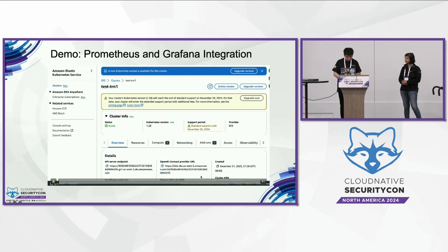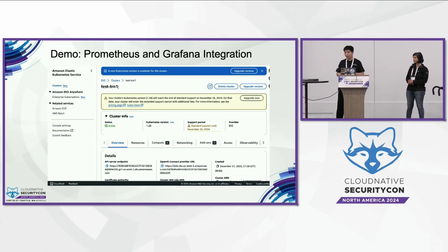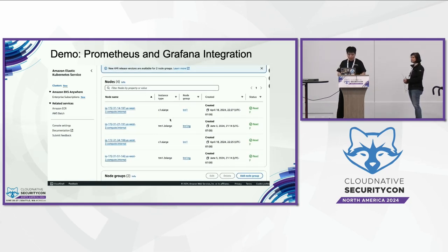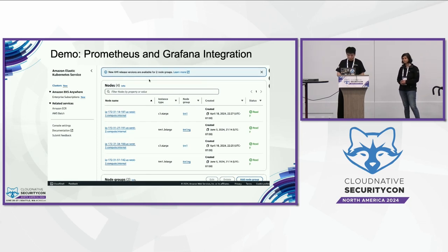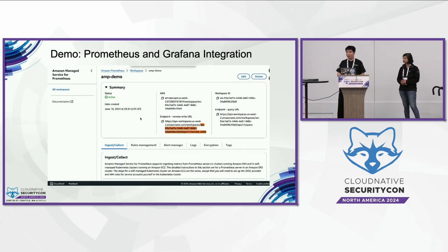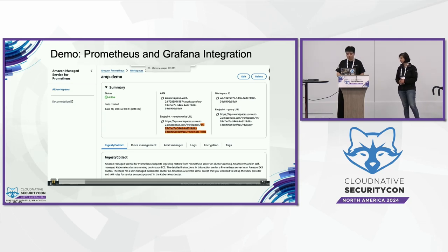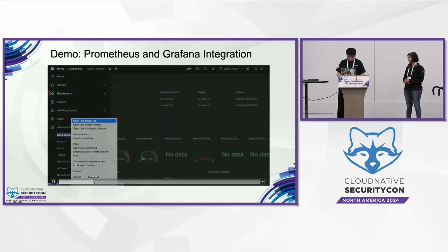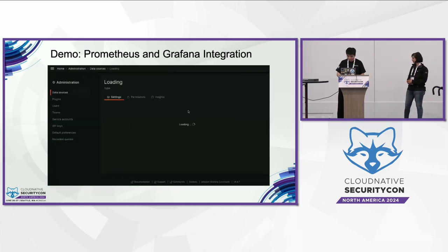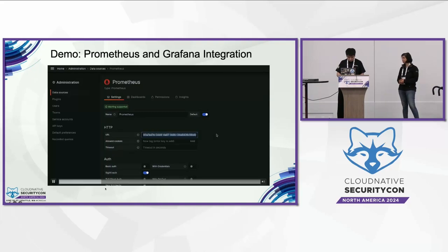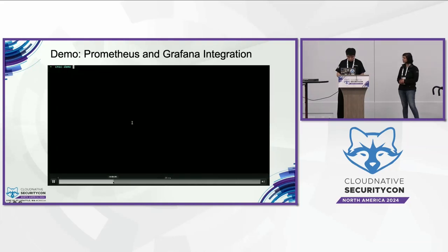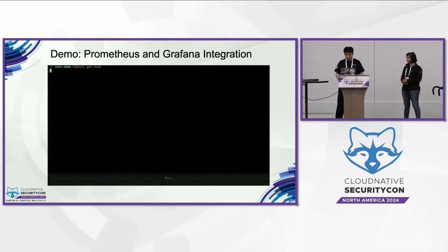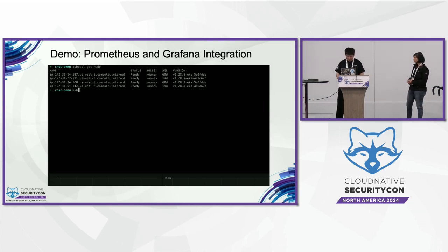Let's start the first recorded demo. I already have a cluster created called TestTRN1 with four nodes. The two C1 nodes are system nodes, but the two TRN1 nodes will be used for the demo. TRN1 is the name of the first generation AWS Trainium chip. I also created an Amazon Managed Prometheus workspace and the Grafana dashboard is set up, with its data source pointed to the Prometheus workspace.